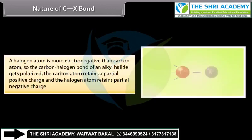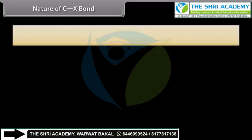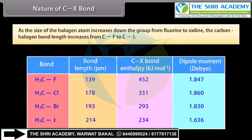A halogen atom is more electronegative than a carbon atom, so the carbon-halogen bond of an alkyl halide gets polarized. The carbon atom retains a partial positive charge and the halogen atom retains a partial negative charge. As the size of the halogen atom increases down the group from fluorine to iodine, the carbon-halogen bond length increases from C-F to C-I.